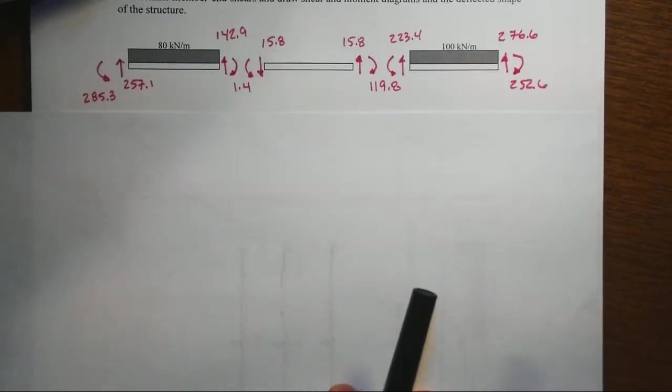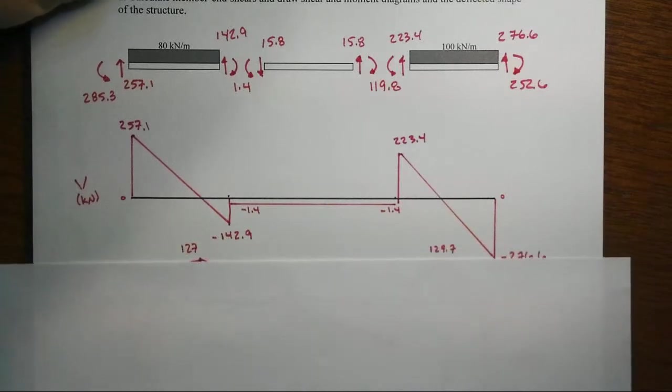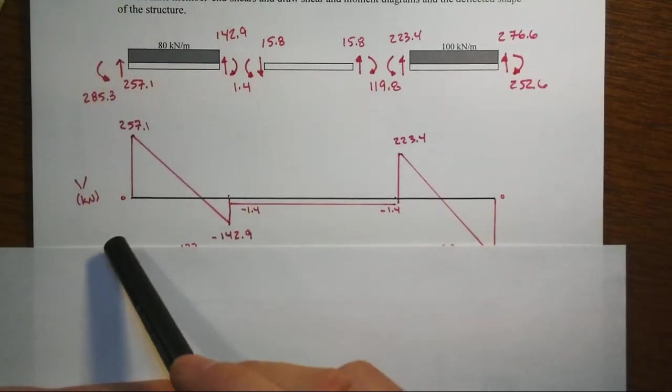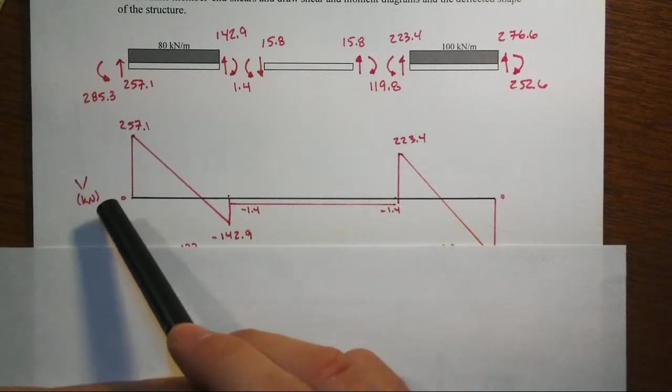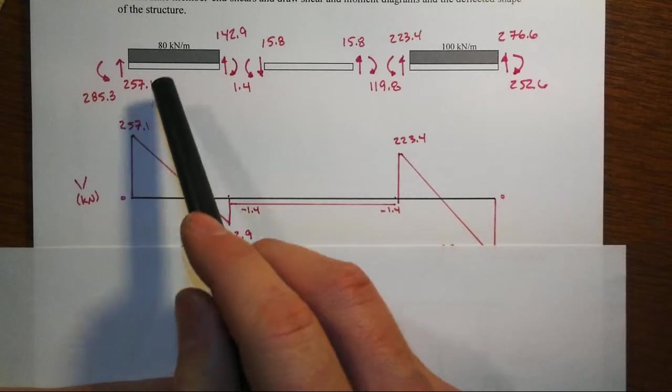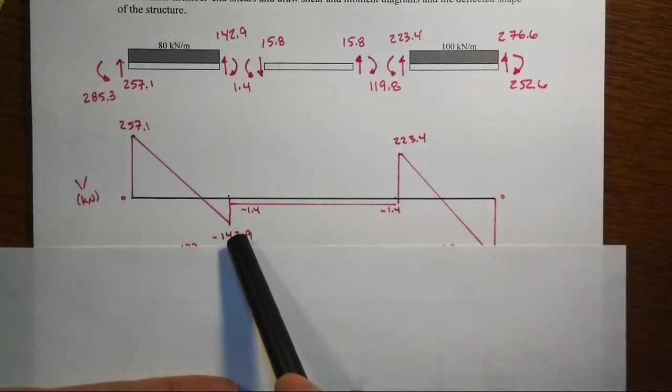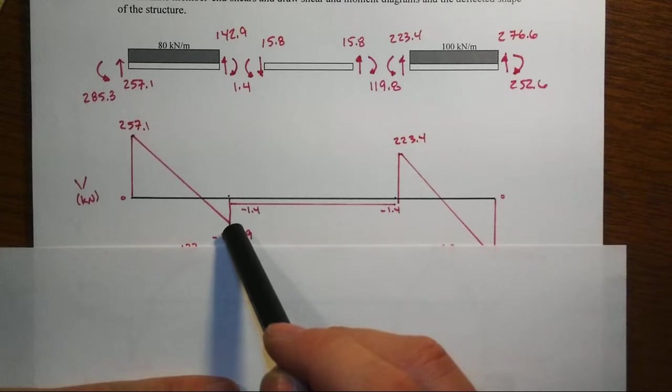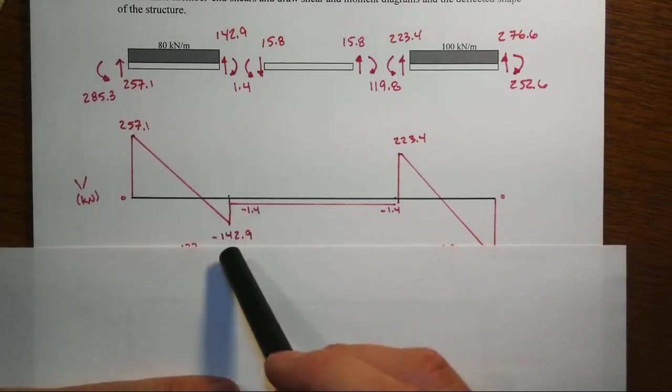Let's take those and transfer them down to the shear diagram. Here we've got our shear in kilonewtons. We pop up by the reaction of 257.1, the slope is given by the load. We come down, we're at then 140, a net of negative 142.9, or a change. That's where a little rounding error comes along, and at least for that member it closes off.